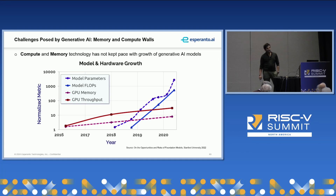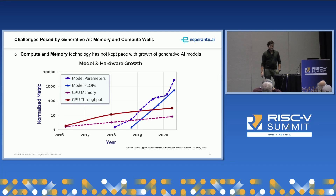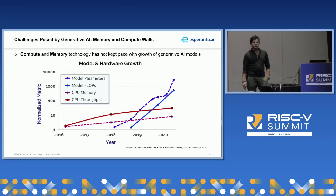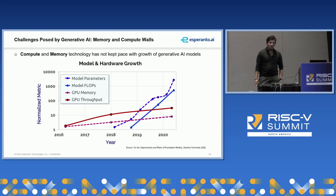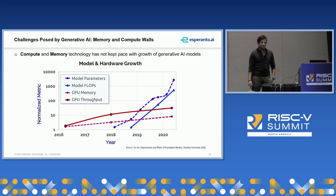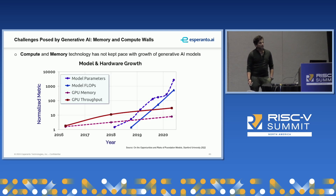This slide shows the first two of those challenges: the memory wall and the compute wall. The foundational model sizes that have been instrumental in the evolution of Gen AI have been growing at a rate of over 400x every two years, while the DRAM capacity required to hold the model parameters has been growing only at about 2x every year — this is what leads to the memory wall. At the same time, the throughput or flop requirements of these LLMs have been growing at about 10x every year, while the computational capabilities of accelerators like GPUs have been growing only at 10x every two years, leading to what we call the compute wall.